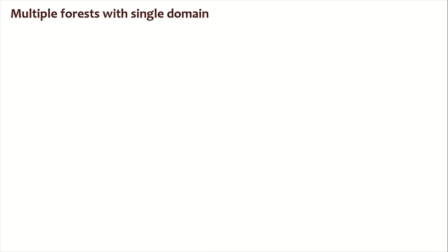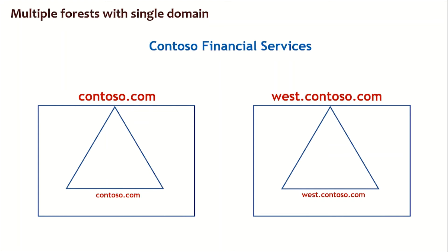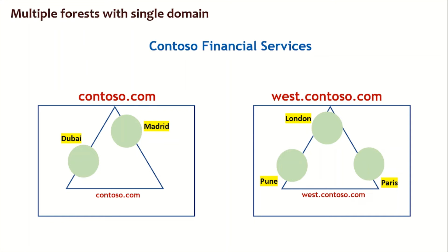Some companies go for multiple forests with single domain. Contoso Financial Services would have multiple forests — say contoso.com and west.contoso.com — but every forest has just one domain. The contoso.com forest has only domain contoso.com, and west.contoso.com has only one domain west.contoso.com, each with their own offices, domain controllers, and devices. Both forests are owned by Contoso Financial Services.